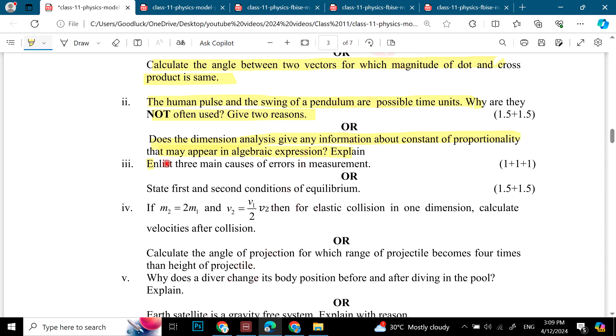Does the dimension analysis give any information about constant of proportionality that may appear in algebraic expression? Explain. Then we have: list three main causes of error in measurement. State first and second condition of equilibrium.